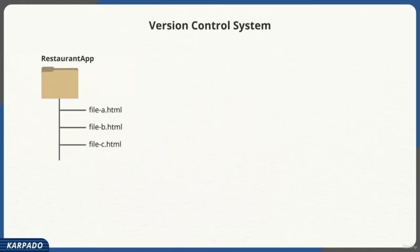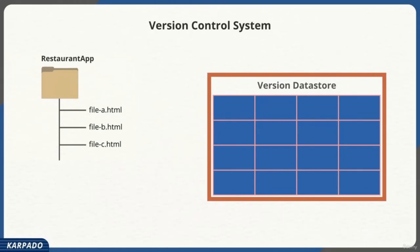The VCS software will have its own data store to store all historical data and backups. It doesn't necessarily have to be a relational database — it can be as simple as a file system. VCS software typically tends to use your own file system to store backups and historical data. Think of this as a backup store to store the state of the project. Once Sundar has a minimum functioning website and has tested everything, he decides to save the state of his current project to retrieve it when needed.